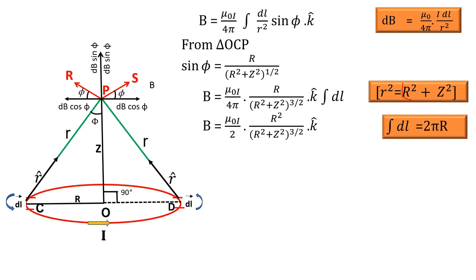Substituting sin φ and r² into the equation: B equals mu₀ I by 4π times [R divided by (R² + z²)^(1/2)] divided by (R² + z²). Combining the powers of (R² + z²): one-half plus one gives three-halves. So we get R divided by (R² + z²)^(3/2) times unit vector k̂, times the integral of dl. The integral of dl equals 2πR. Multiplying: we have one R in the expression, and multiplying by another R gives R squared; the 2π cancels with 4π in the denominator, leaving 2.